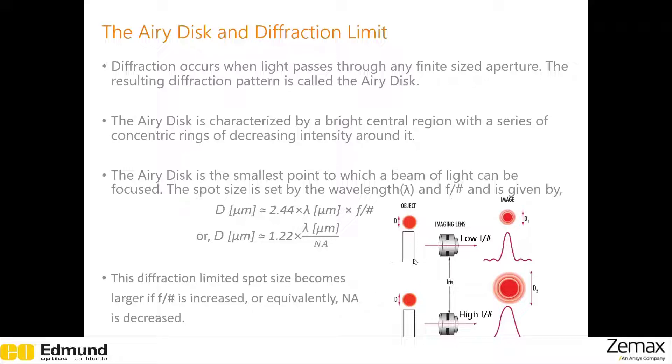As a simple example, you can see that a lens with low f-number produces smaller spot compared to what you can achieve with high f-number lens.